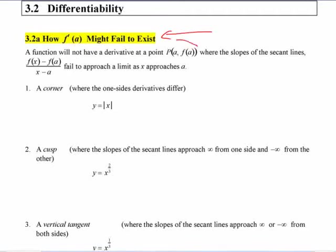The function will not have a derivative at a certain point where the slopes of the secant line fail to approach a limit, meaning the left-hand limit and the right-hand limits are not equal or one of them isn't defined. We already looked at this function here.